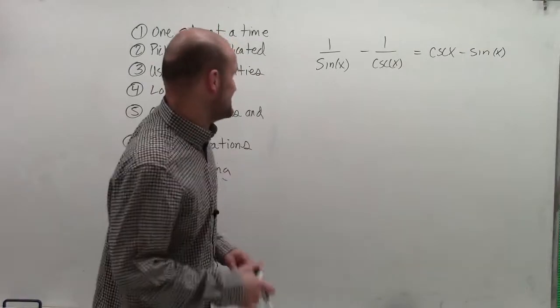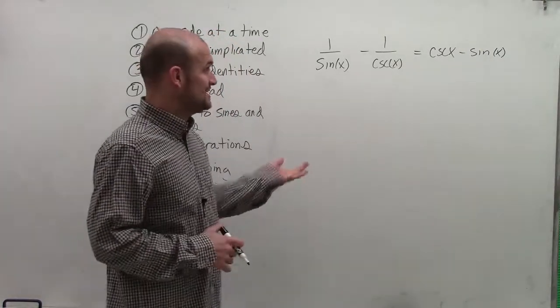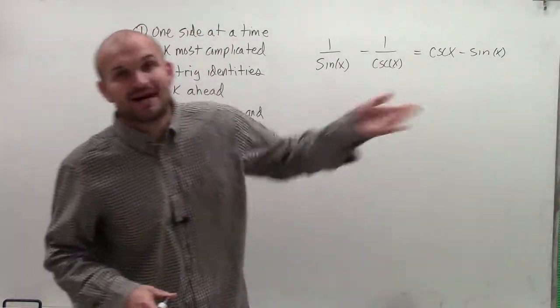OK, welcome. So I have 1 divided by sine of x minus 1 divided by cosecant of x equals cosecant of x minus sine of x.